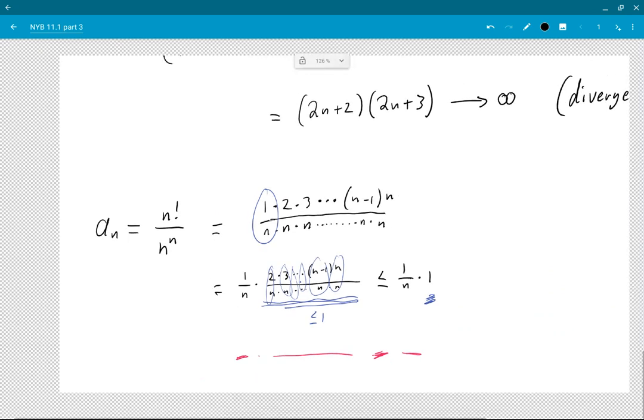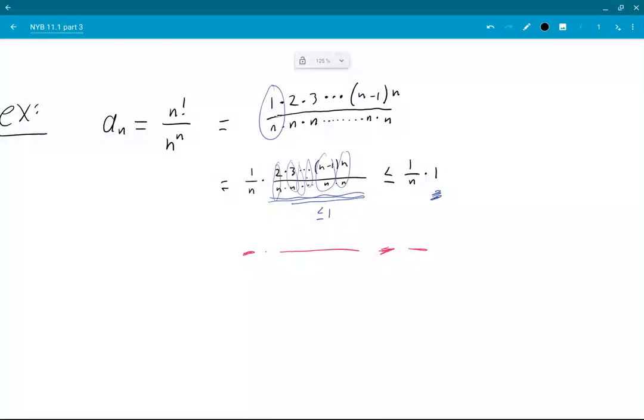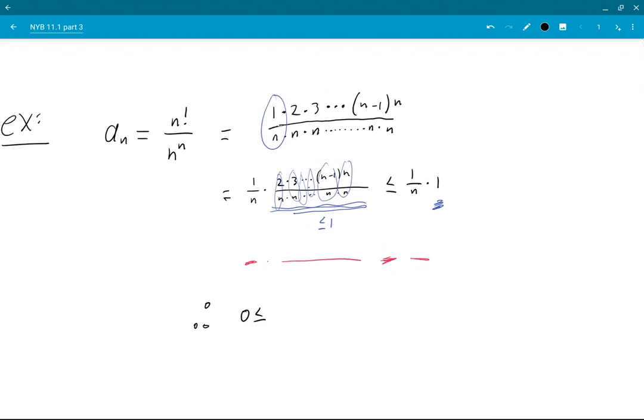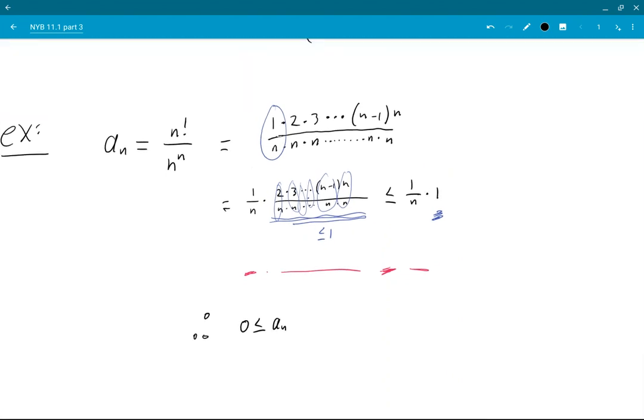Okay, now we'll use squeeze theorem. So therefore we have an is certainly bigger than 0, and it's between 0 and 1 over n.